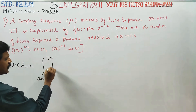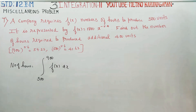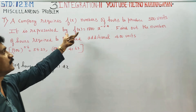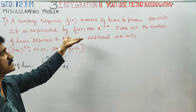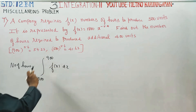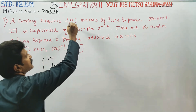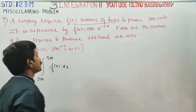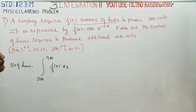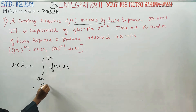The function is f(x) dx. Now, if you want to integrate the function from 500 to 900, the integration is from 500 to 900.